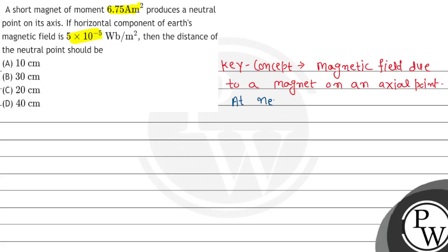We know that at the neutral point, the magnitude of the horizontal component is equal to the magnitude of the magnetic field of the magnet. So let's find the distance of the neutral point from the magnet on its axis.